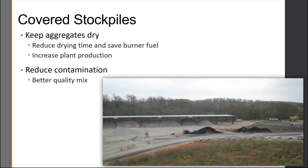If we can cover those stockpiles, that's wonderful. If you can place your stockpiles on a paved surface with a little bit of a slope, when it rains, we want as much water to get out as possible. The drier the aggregates are, the faster they'll dry in the dryer drum at the plant — that saves burner fuel and increases plant production. Having a cover keeps moisture out. Anytime we reduce the variability of the materials in the mix, we're going to have a better quality, more consistent mix.